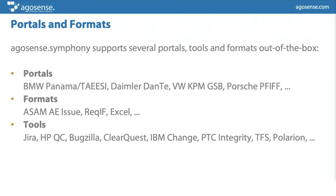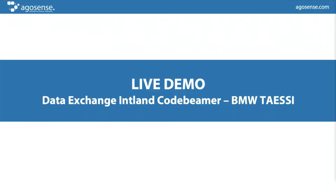This was the first and larger portion of the presentation. I will now hand over to Christian for the live demo, where he will show us how to configure Symphony and how to retrieve data from TZ (BMW TSE) and put it into Codebeamer.